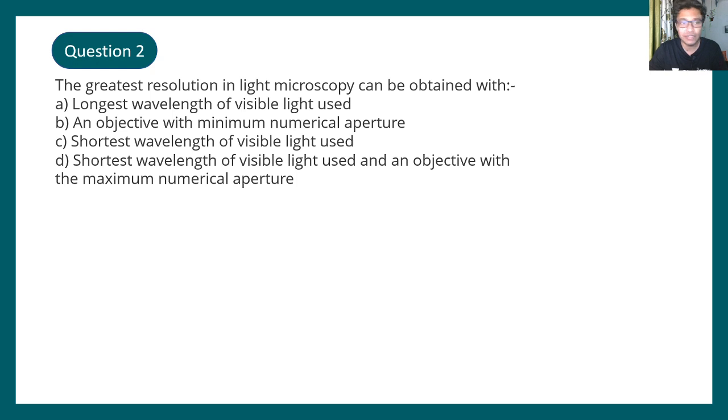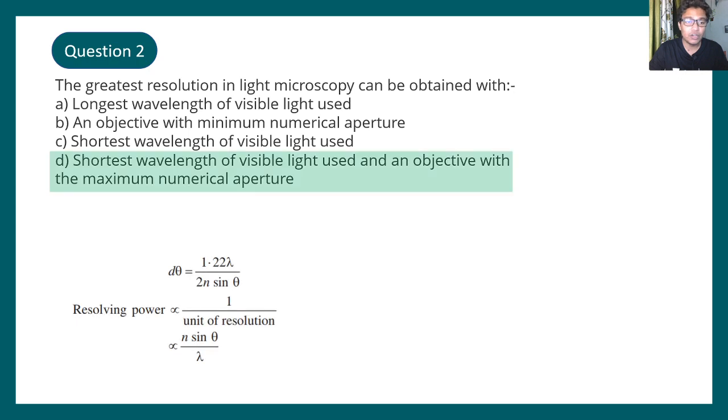But do you really know why? If you want to know why, soon I would have a microscopy course in Unacademy and the link would be provided in the description. So you can join that class to learn details about it. But from this formula at least we can appreciate it would be proportional to numerical aperture and inversely proportional to the wavelength. So these factors would affect resolving power. Okay, question number two says the greatest resolution in light microscopy can be obtained with: longest wavelength of visible light used, an objective with minimum numerical aperture, shortest wavelength of visible light used, shortest wavelength of visible light and along with objective which would have a maximal numerical aperture.